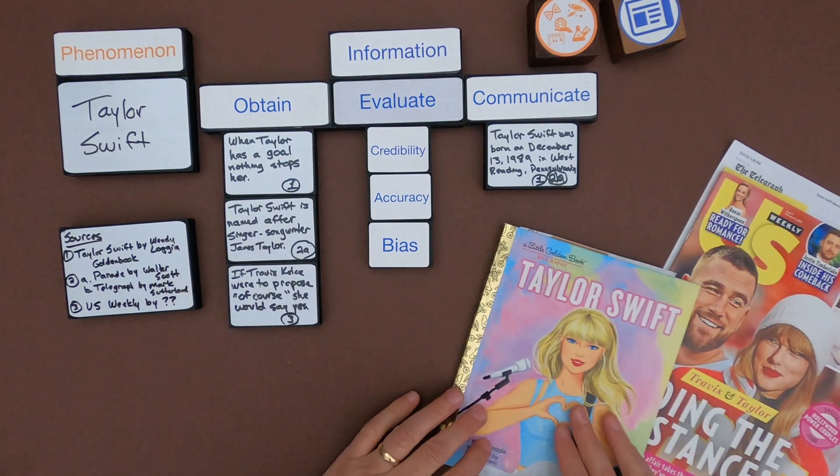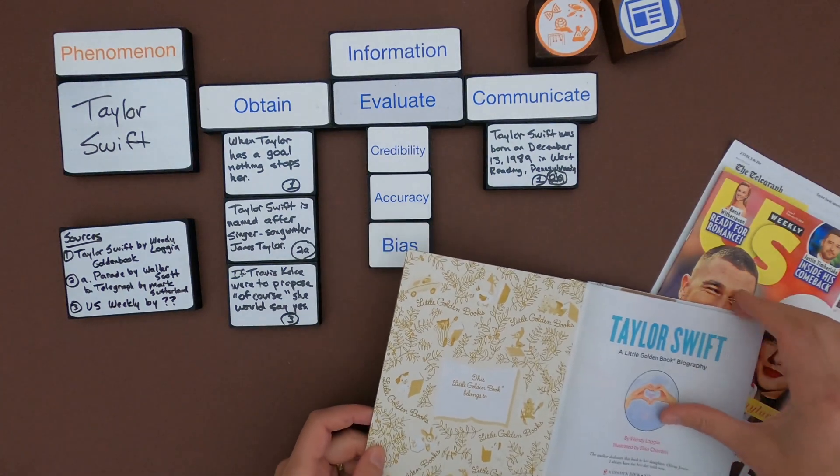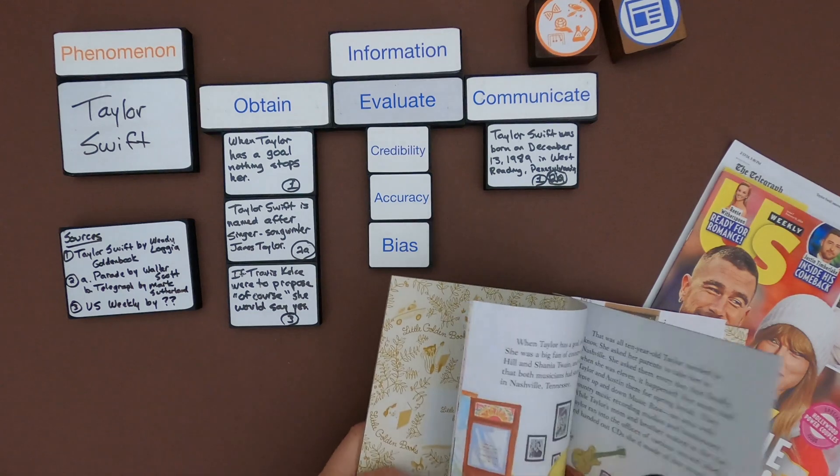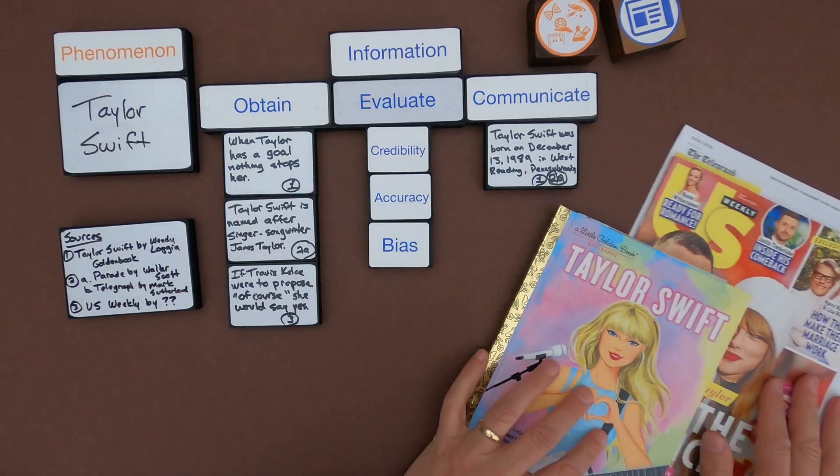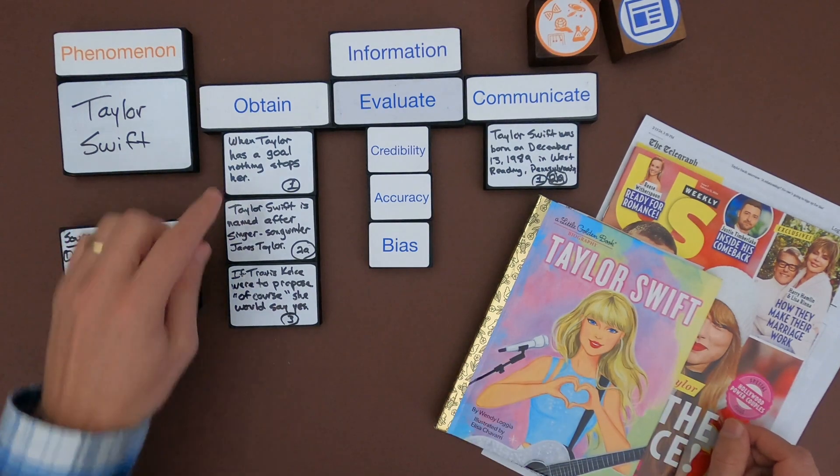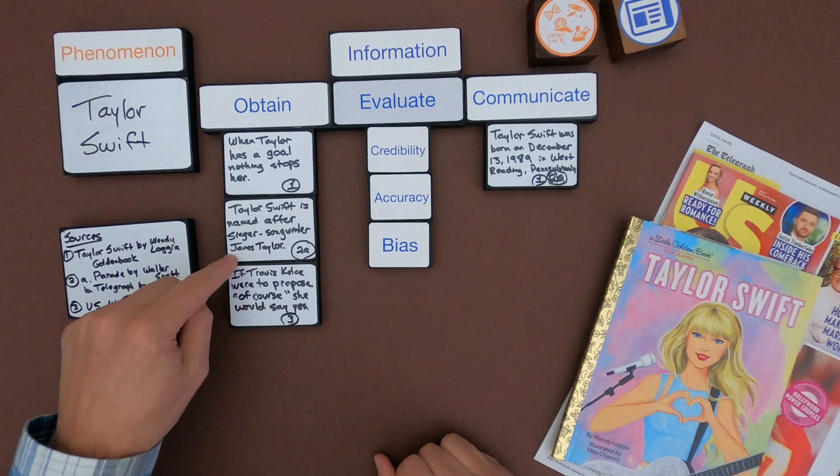If we look at the next one, when Taylor has goals, nothing stops her. Well, that's an interesting thing. I think the source would be credible, but I don't know how accurate that's going to be. So it's just based on a story that they're trying to tell. And so I don't know if nothing will stop her. I think this is kind of an opinion. And so I don't think I would be willing to move that into the communicate.